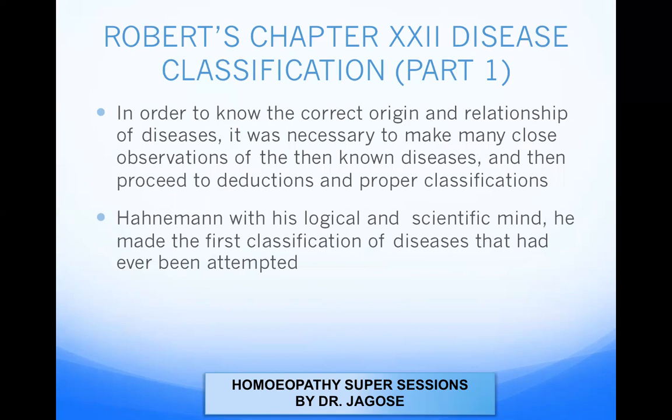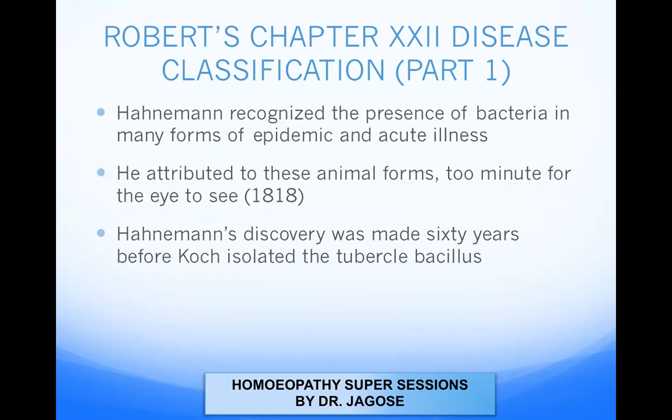In order to know the correct origin and relationship of disease, it was necessary to make close observations of then-known diseases and then proceed to deductions and proper classifications. Hahnemann, with his logical and scientific mind, made the first classification of disease that had ever been attempted. He also recognized the presence of bacteria in many forms of epidemic and acute illnesses.